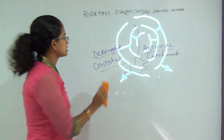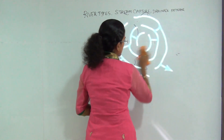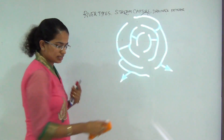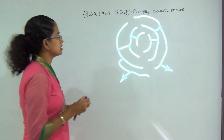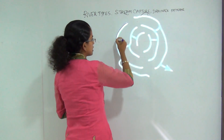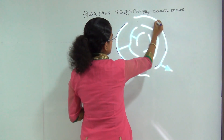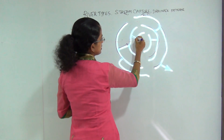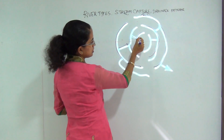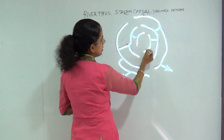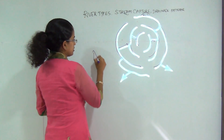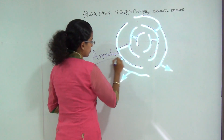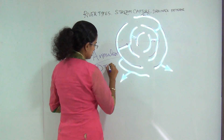The next is the annular drainage pattern. Under annular drainage patterns, you have concentric rings — everything is arranged in a circular or concentric manner, with outer and inner circles related to one another. Streams drain along these rings, forming beautiful circular patterns known as the annular drainage pattern.